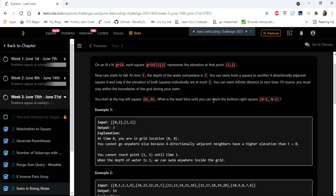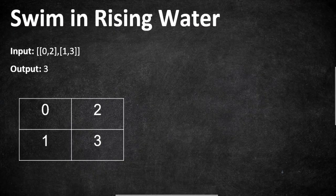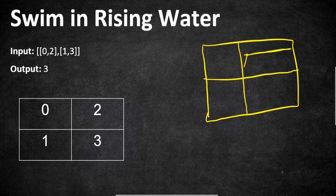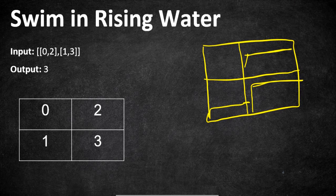Let's understand this problem with an example. Consider the first example from the problem statement — this grid represents land and the values are the elevations. The first square has elevation 0, the second has elevation 2, grid position (1,0) has elevation 1, and grid (1,1) has elevation 3. We are allowed to swim between grids only when the water level is above or equal to the elevation — if the elevation is 2, the water must be at level 2 or above so that we can swim.